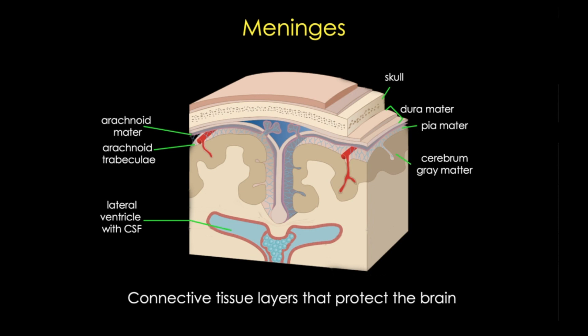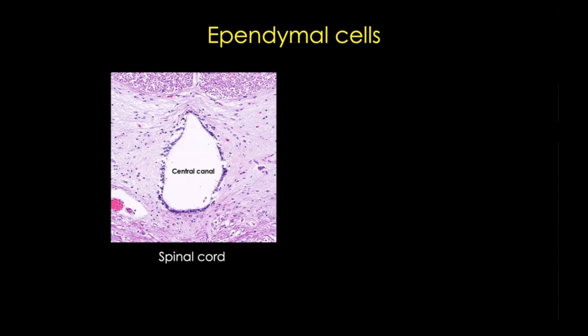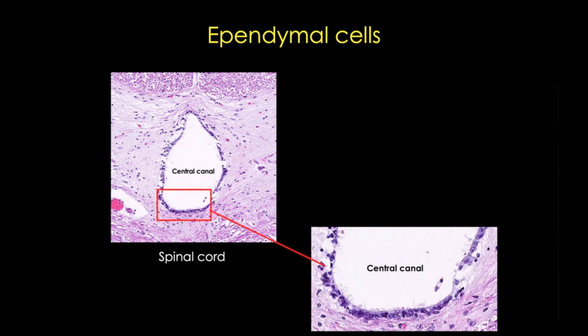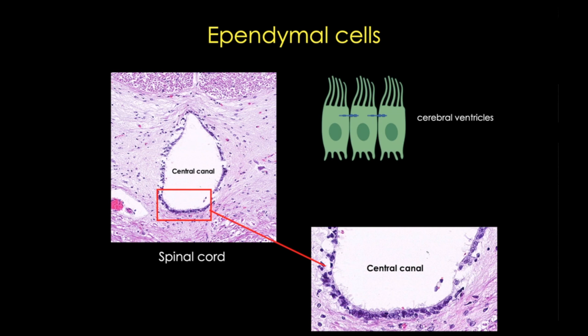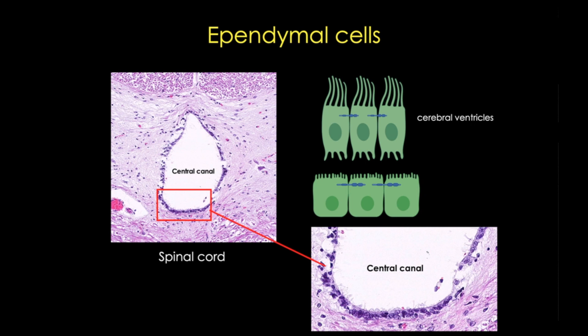Now let's take a closer look at the ependymal cells of the central canal. Here's a close-up image of the central canal of the spinal cord. These cells are derived from neuroepithelium and are either ciliated columnar cells or cuboidal cells with extensive microvilli. They are important in helping with production of the CSF, moving fluid from the capillaries into the ventricles, and can also help move metabolic waste.